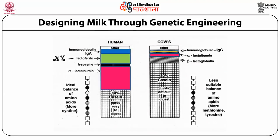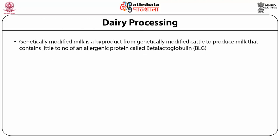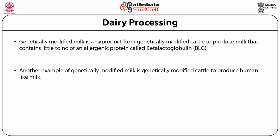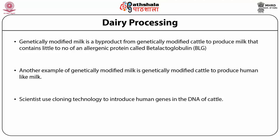Designing milk through genetic engineering: there is a 26% increase in milk production when genetically engineered cows are used. Genetically modified milk is a byproduct from genetically modified cattle to produce milk that contains little to no allergenic protein called beta-lactoglobulin. Another example is genetically modified cattle producing human-like milk; scientists use cloning technology to introduce human genes into the DNA of cattle.